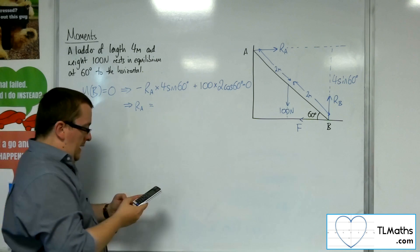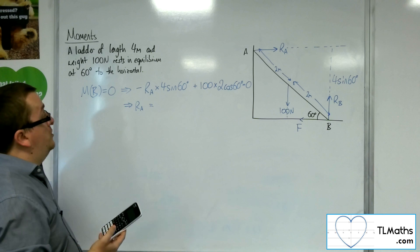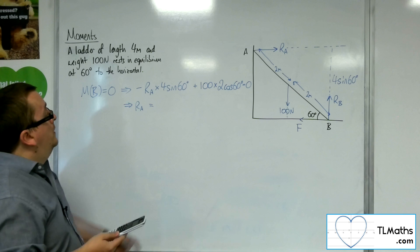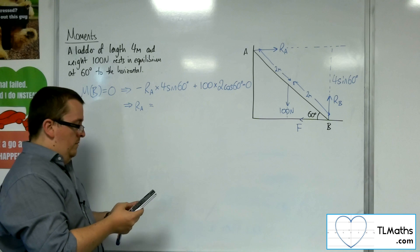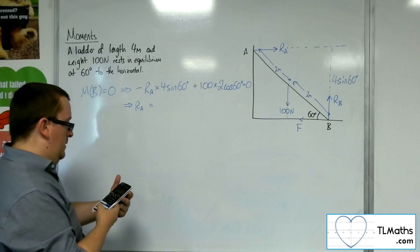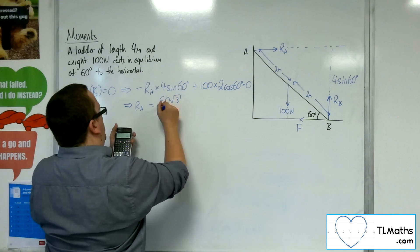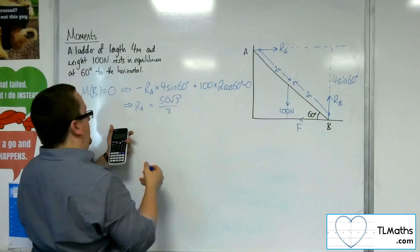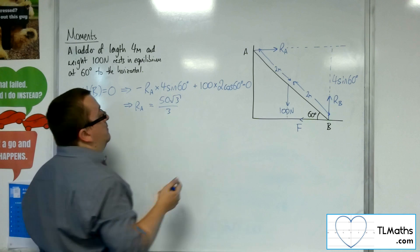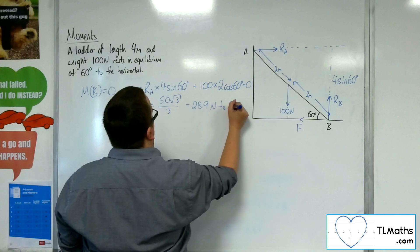And that's going to be 0. So I've got 100 times 2 times cos 60, which is just 100, because cos 60 is a half, divided by 4 sine 60. And that gets me 50 root 3 over 3, so 28.9 newtons to 3 sig fig.